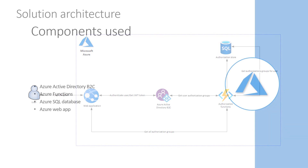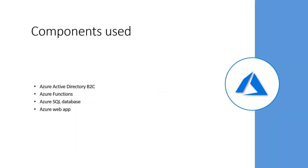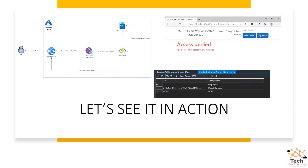That was the theory. Before we begin the demo, I would also like to discuss the components used: Azure Active Directory B2C, Azure Functions, Azure SQL Database, and Azure Web App Service — all available in the Azure cloud. Now let's jump into the demo and discuss a custom authorization store connected with Azure Active Directory B2C.